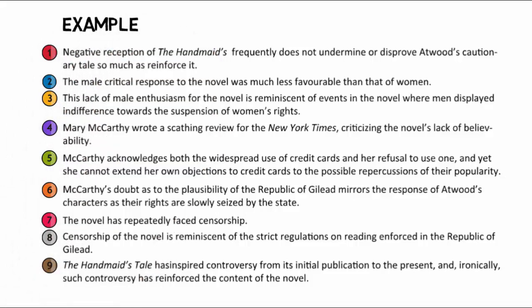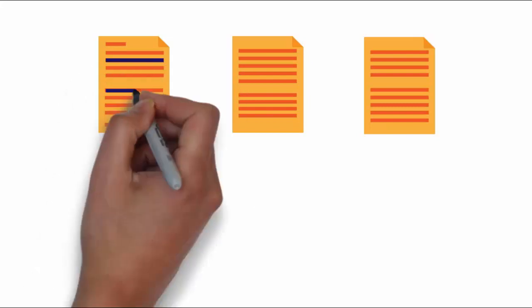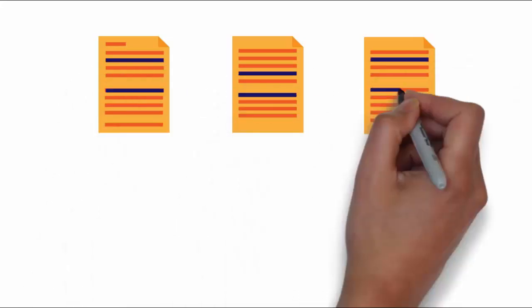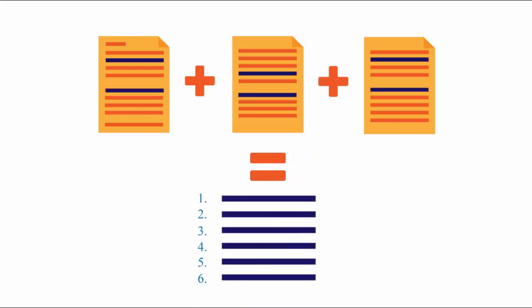Here is an example of a reverse outline. It is made up of the main points of an essay on Margaret Atwood's novel The Handmaid's Tale. For each paragraph in the essay, you should have a sentence or two to summarize the main idea. Once you've completed the sentences for each paragraph, you should have a condensed version of your essay. If you group the sentences together, you should have an accurate version of the main ideas you're trying to communicate in your essay.